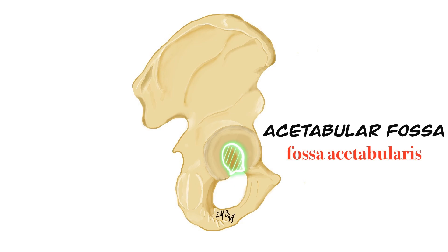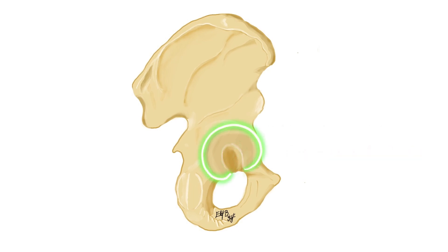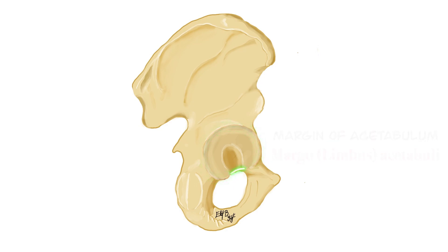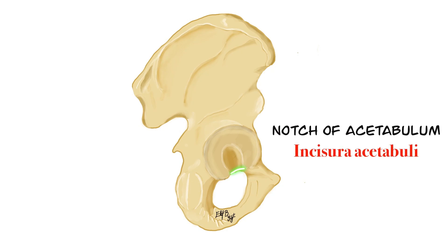Fossa means pit, cavity, or depression in a bone. The prominent edge around the acetabulum is the acetabular margin, which can be called margo acetabuli or limbus acetabuli in Latin. Limbus or margo means edge in Latin. The facies lunata continues with a notch at the inferior aspect, called the acetabular notch or incisura acetabuli in Latin. Incisura means notch in Latin.